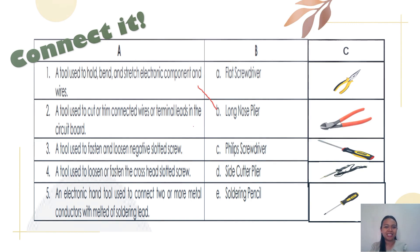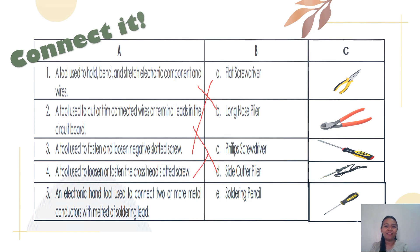The correct answer for number two is Letter D, side cutter plier. Number 3: a tool used to fasten and loosen a negative slatted screw — it is Letter A, flathead screwdriver. Number 4: a tool used to loosen or fasten the crosshead slatted screw — definitely a Phillips screwdriver. Number 5: an electronic hand tool used to connect two or more metal connectors with melted soldering glue — yes, soldering pencil.